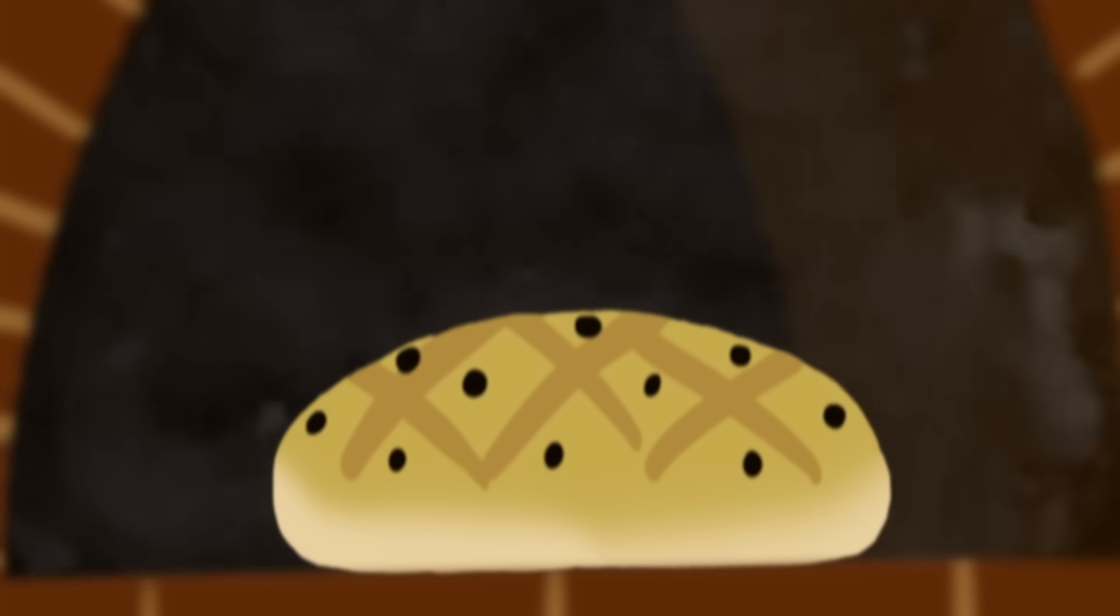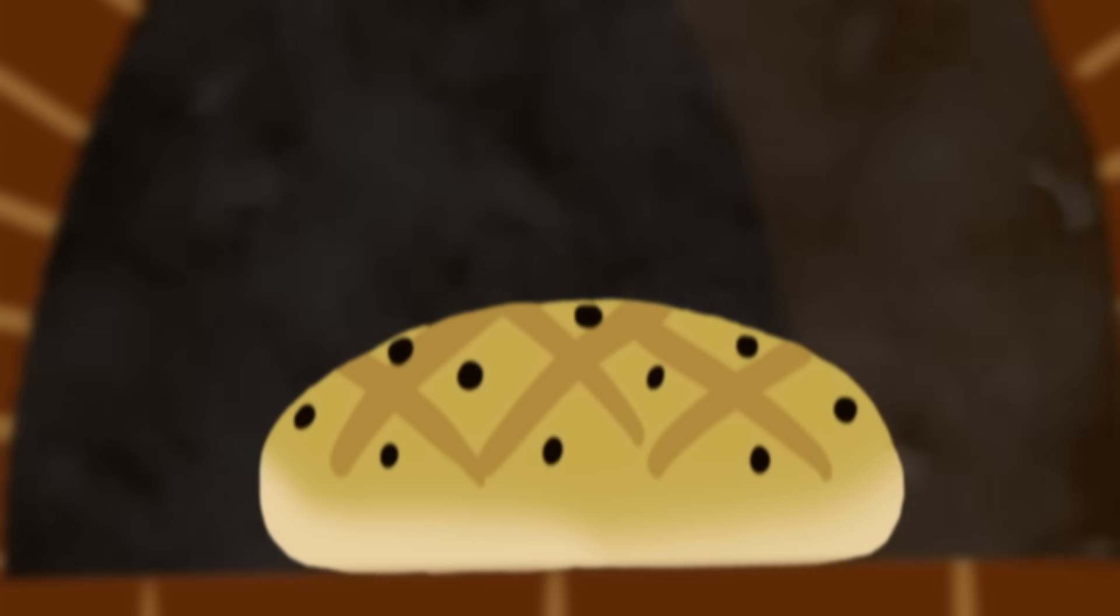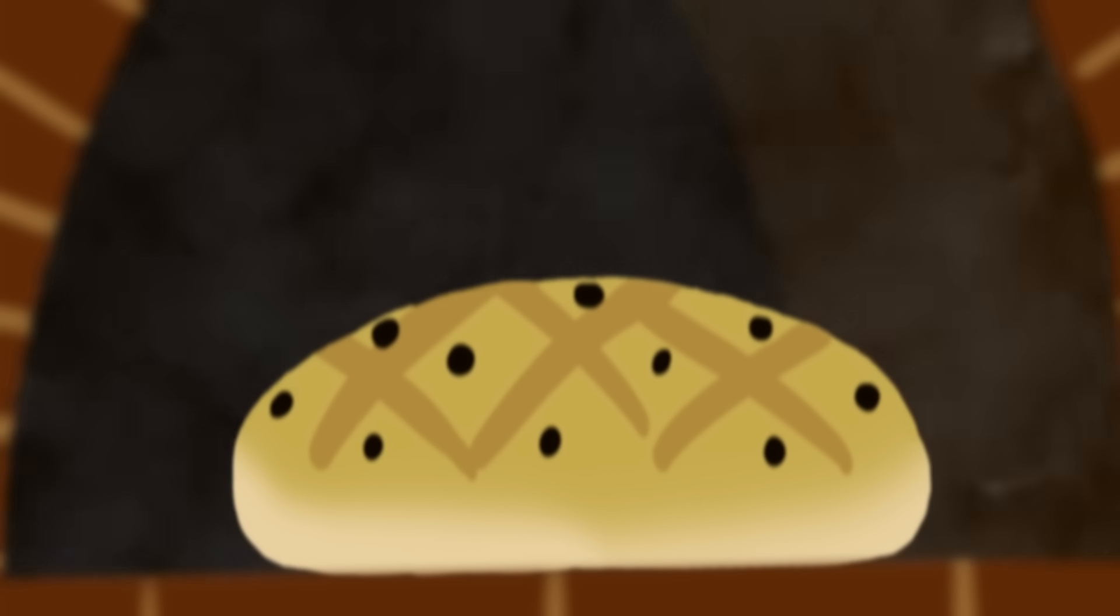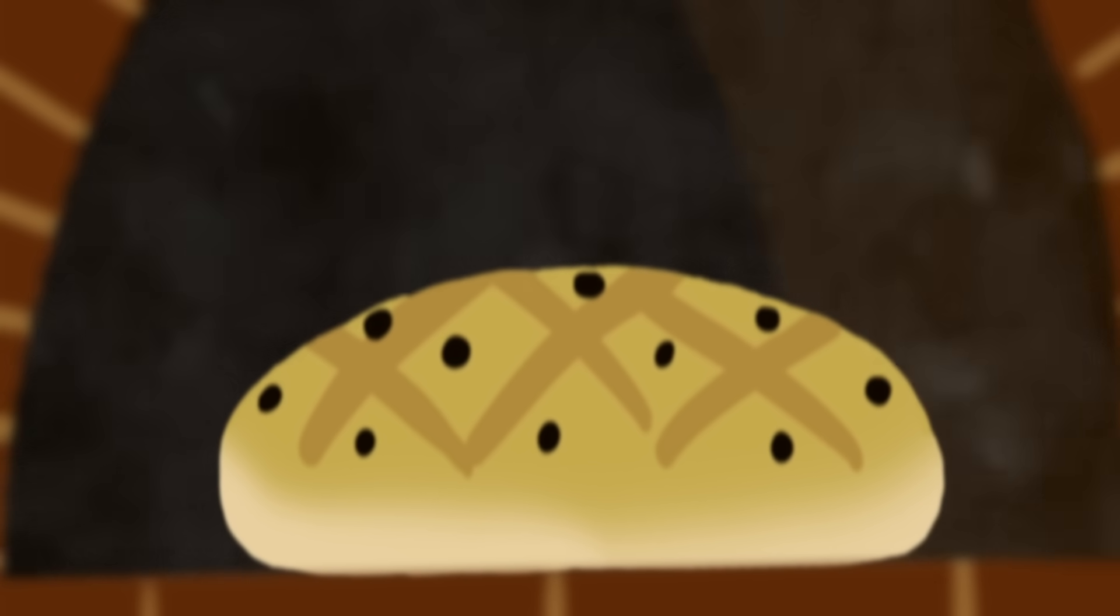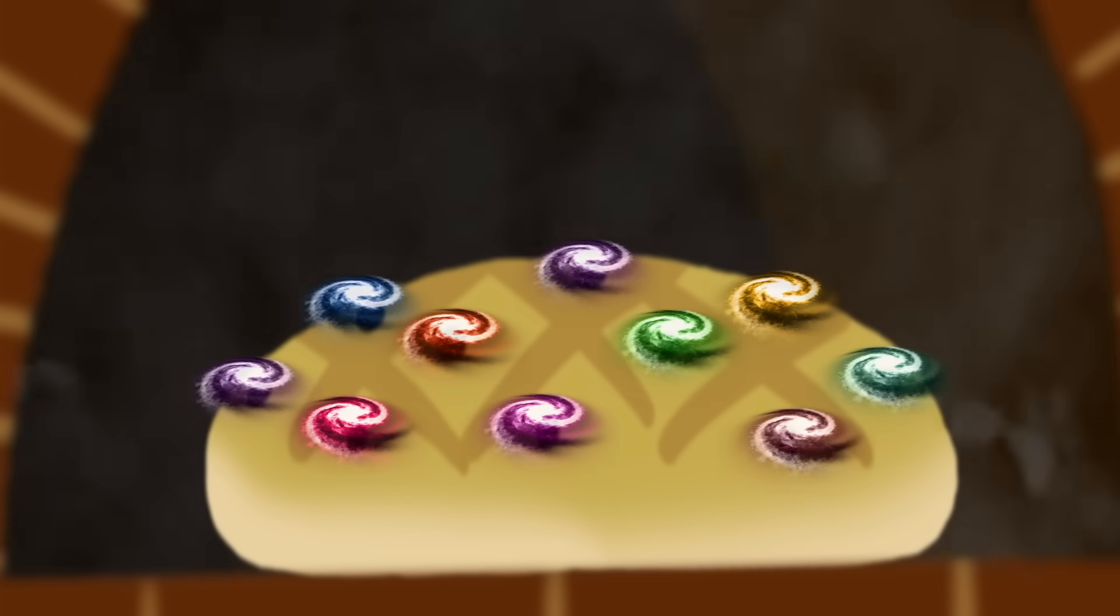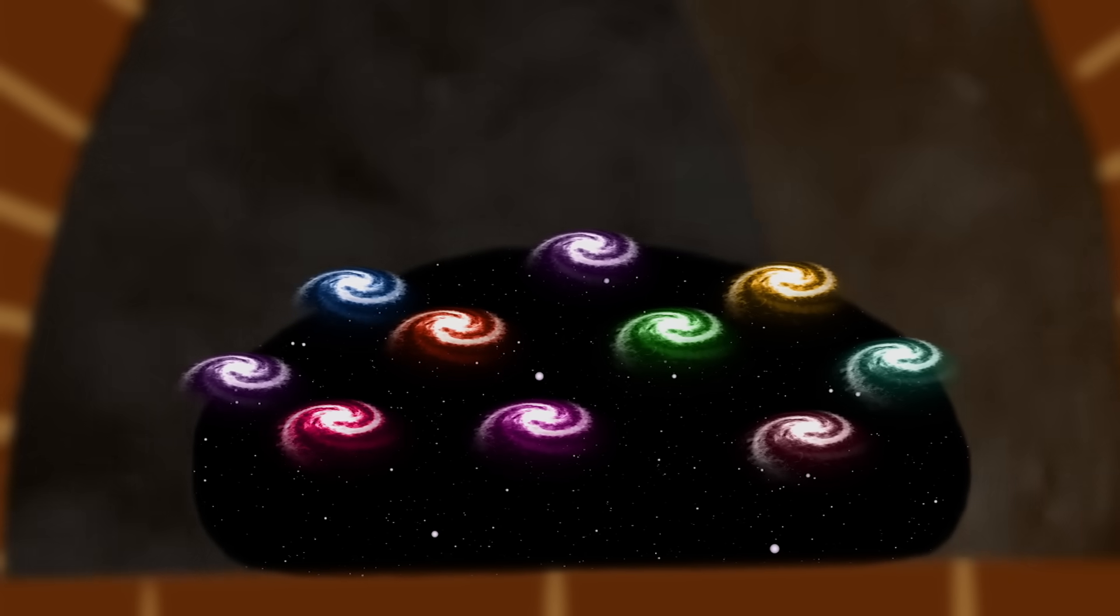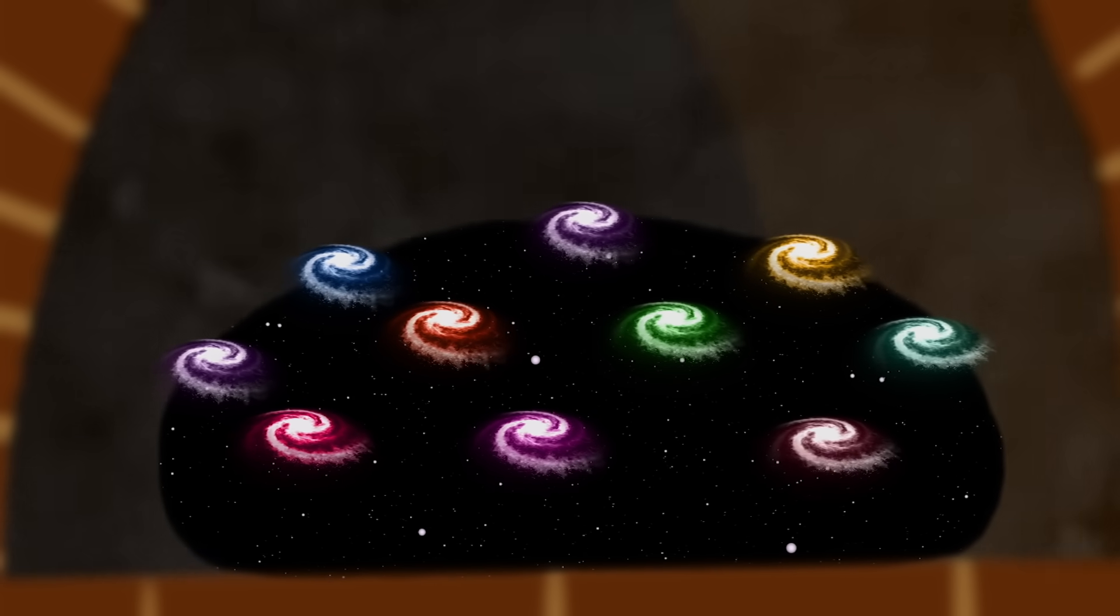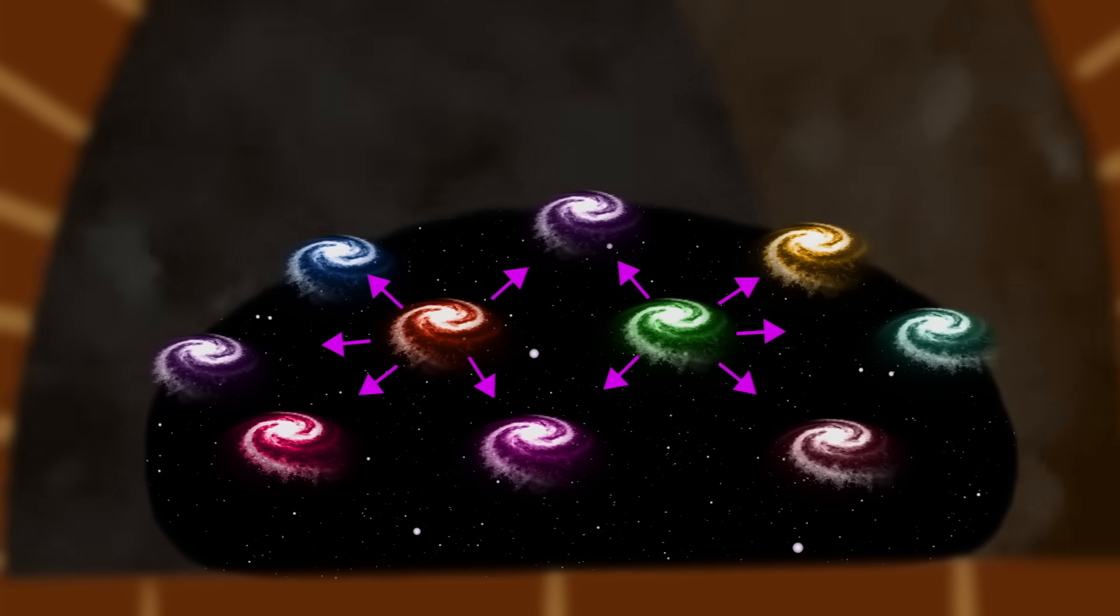Consider a loaf of raisin bread rising in the oven. The batter rises by the same amount between each and every raisin. If we think of raisins as a stand-in for galaxies and batter as the space between them, we can imagine that the stretching or expansion of intergalactic space will make the galaxies recede from each other.